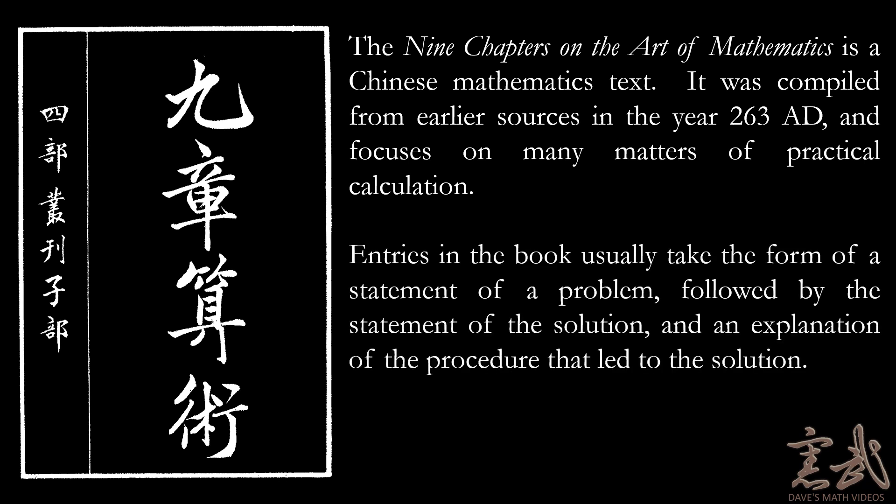Entries in the book usually take the form of a statement of a problem, followed by the statement of the solution, and then an explanation of the procedure that led to the solution. This is somewhat different from the patterns we see in ancient Greek mathematics, which attempt to derive things from first principles. However, this was probably used as some kind of a manual for state bureaucrats, thus the focus on more practical matters.